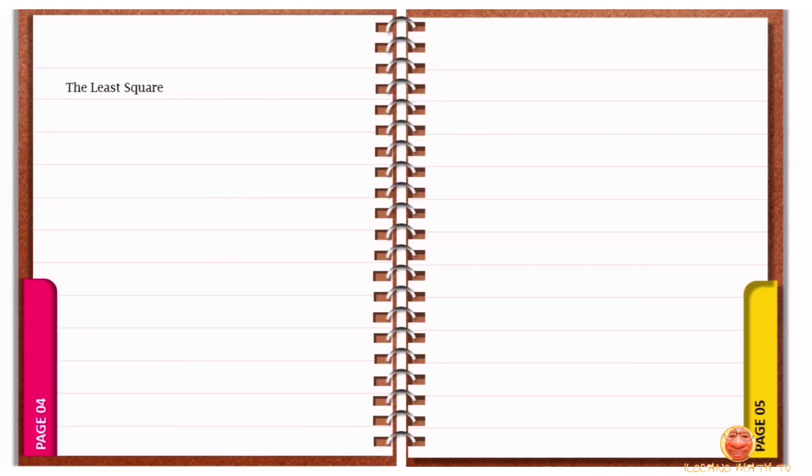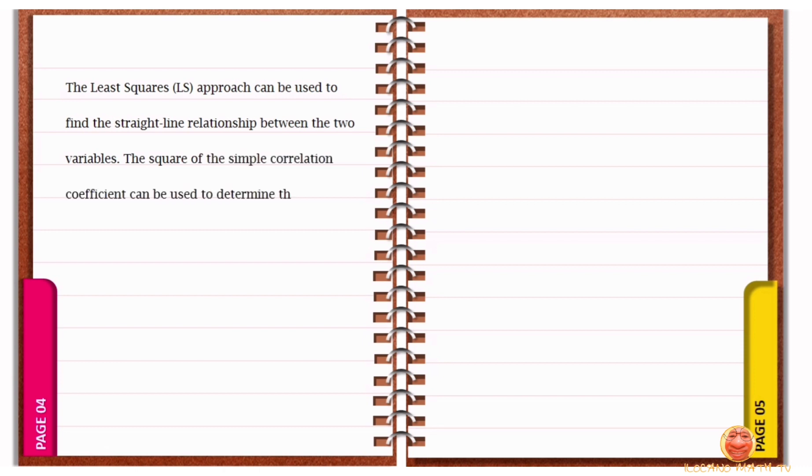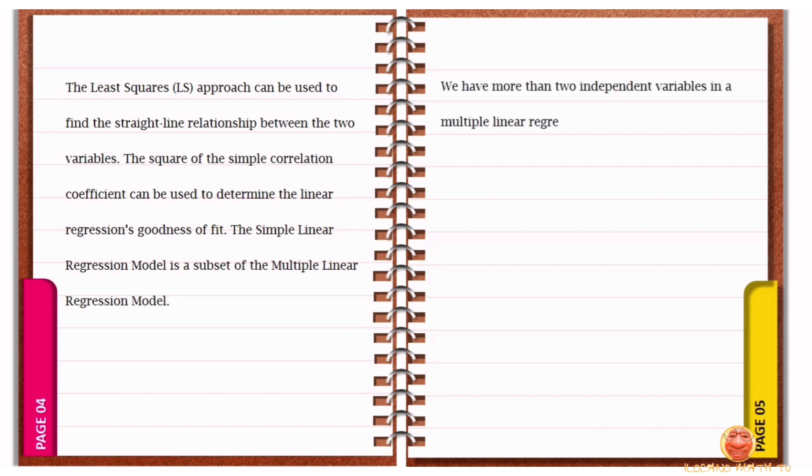The least squares approach can be used to find the straight line relationship between the two variables. The square of the simple correlation coefficient can be used to determine the linear regression goodness of fit. The simple linear regression model is a subset of the multiple linear regression model. We have more than two independent variables in a multiple linear regression model. The coefficient of determination, which is the square of the multiple correlation coefficient, is used to determine the quality of fit in this scenario.